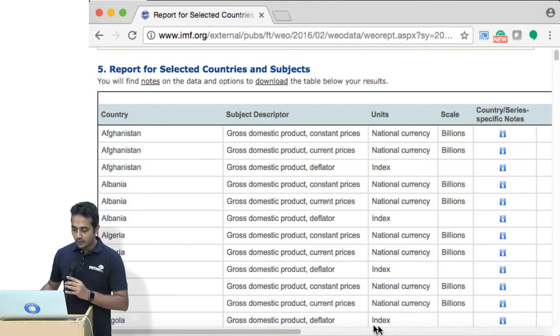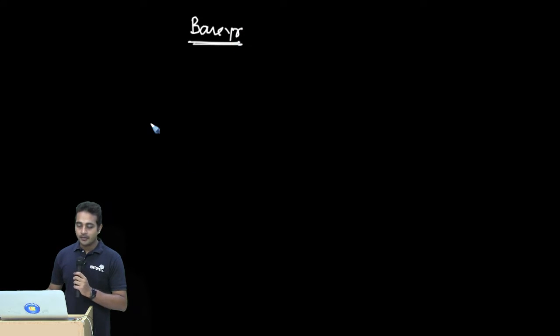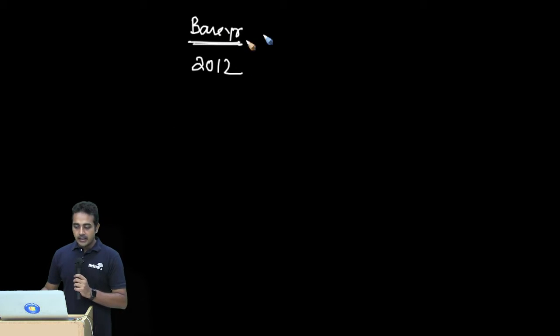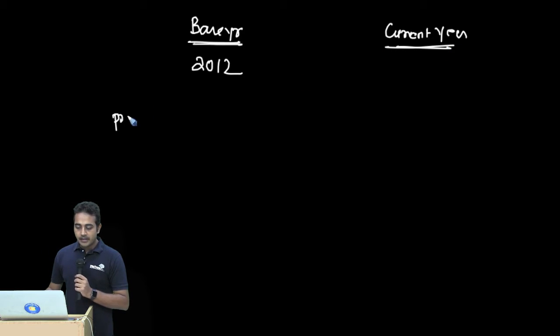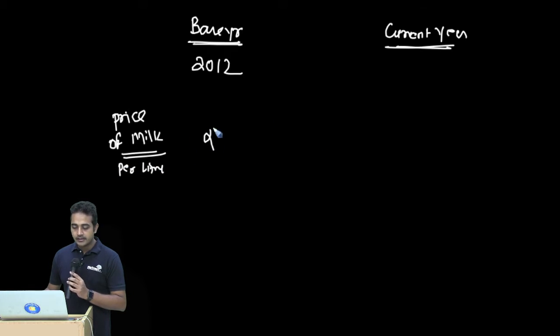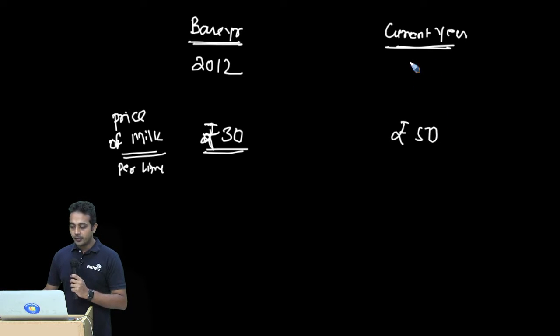Before we start doing the calculations, understand how it works. Imagine we have some base year — for India, I think the IMF uses about 2012 or 2013 as the base year. And then we have the current year. Let us say the price of milk, just to keep it easy as an example.